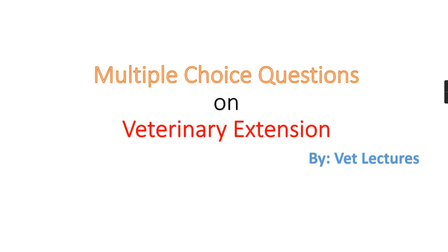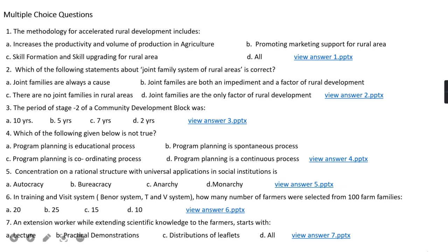Hello all, welcome to my channel. Today we will discuss multiple choice questions on veterinary extension. Question number one: The methodology for accelerated rural development includes option A, increase the productivity and volume of productions in agriculture; option B, promoting marketing support for rural area; option C, skill formation and skill upgrading for rural area; option D, all.